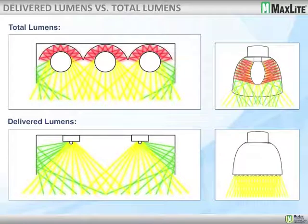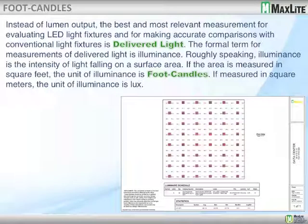Looking at our chart, we can see a representation of total lumens where light comes out 360 degrees, bouncing all over the place — and that's how light was measured. Everybody asked what the initial lumens of the lamp were. Now with delivered lumens, we ask how much light is actually hitting the surface — what's being delivered to the work area. Delivered lumens are the most relevant measurement for evaluating LED light fixtures and for making accurate comparisons with conventional fixtures. The formal term for measuring delivered light is illuminance.